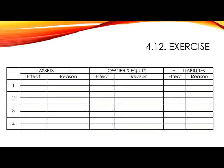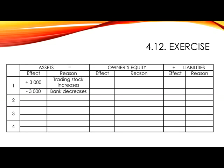Exercise 4.12, Number 1: Bought and paid for trading stock, R3000. Both bank and trading stock are assets. All that is happening is that the bank is being changed into stock. Assets will therefore show plus R3000 for trading stock increases and minus R3000 as bank decreases. Owner's equity is not affected as the stock has not yet been sold and therefore there is no income nor expense incurred as yet.